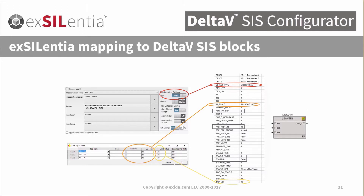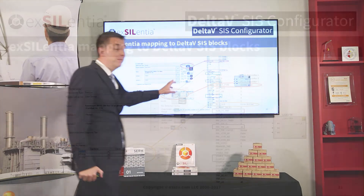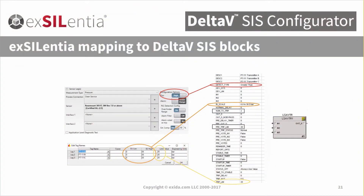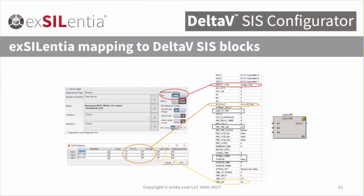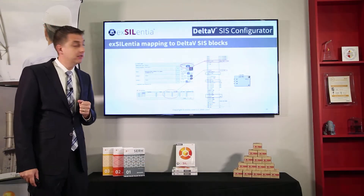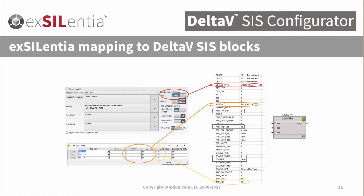Let's look at some configuration options for the sensors. We have a high trip or low trip selection, indicating if your trip point is above or below your typical process value. Based on that, we specify that we're going to trip if the process value is greater than the trip limit — defined in Excellentia. The range 0 to 30 bar defined in Excellentia shows up directly here. For a two-out-of-three voter, the number to trip is two.